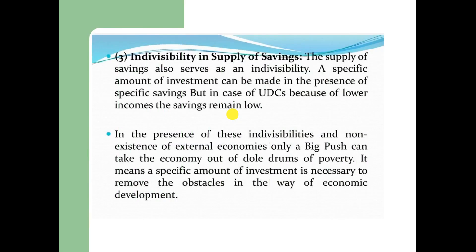The third type of indivisibility is indivisibility in the supply of savings. The supply of savings also serves as an indivisibility. A specific amount of investment can be made only in the presence of specific savings, but in underdeveloped countries, because of lower incomes, savings remain low. In the presence of these indivisibilities and the non-existence of external economies, only a big push can take the economy out of the vicious circle of poverty. A specific amount of investment is necessary to remove the obstacles in the way of economic development.